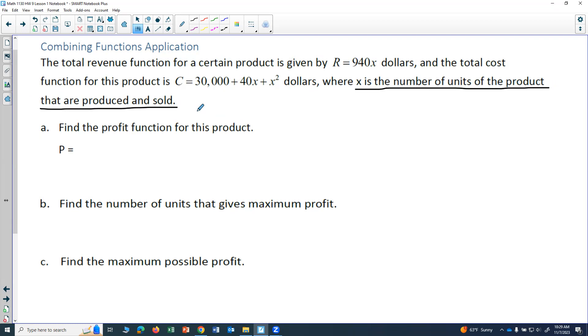We want to find the profit function for this product. Now the profit is revenue, which is the money coming in, minus cost. So this is going to be R(x) - C(x). So we're actually seeing an application of combining functions by subtraction.